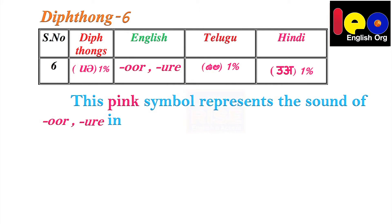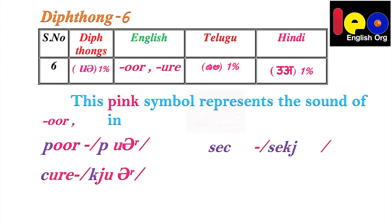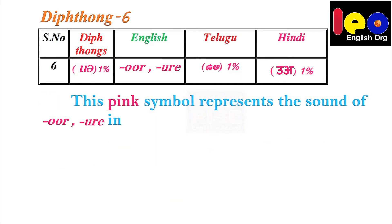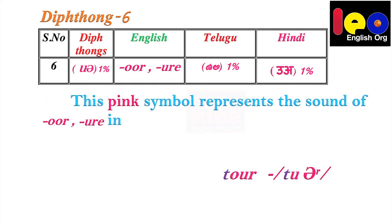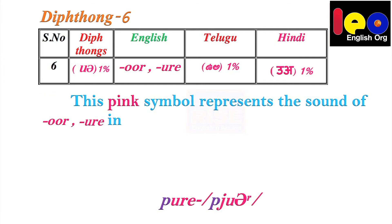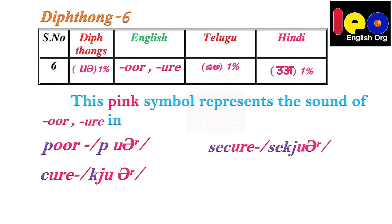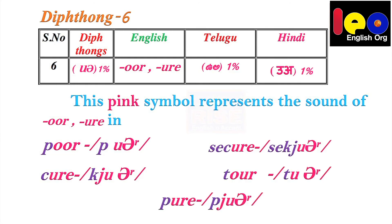Diphthong 6. Below the table you see U, O, and R — 'pure'. This pink symbol represents the sound of OOR in 'poor', URE in 'cure', URE in 'secure', OUR in 'tour', URE in 'pure'. Don't say 'poor', say 'pʊə'. Don't say 'cure', say 'kjʊə'. Don't say 'secure', say 'sɪˈkjʊə'. Don't say 'tour', say 'tʊə'. Don't say 'pure', say 'pjʊə'. In the same way: 'security', not 'security' — sɪˈkjʊərɪti.